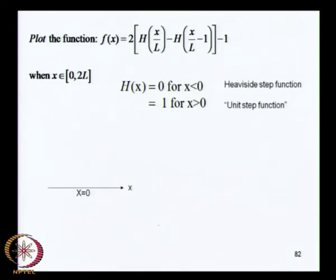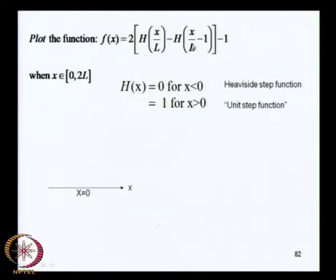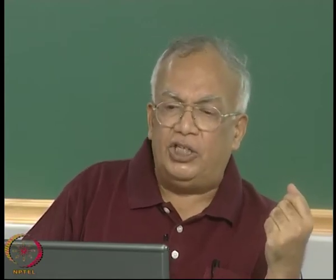Let us plot a function f(x) defined in terms of the Heaviside function h(x), also sometimes called the step function. The definition of the Heaviside function is very simple: h(x) equals 0 if x is less than 0, and equals 1 if x is greater than 0 — which is why it is called the step function, because at x equal to 0 its value suddenly in one step shoots up from 0 to 1.